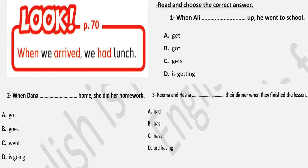Events that occurred one after another: 'When we arrived, we had lunch.' Something happened first, and something happened next. We say: 'When we arrived' — that's what happened first — then 'we had lunch' next. Again, we need the past tense throughout. Don't forget.